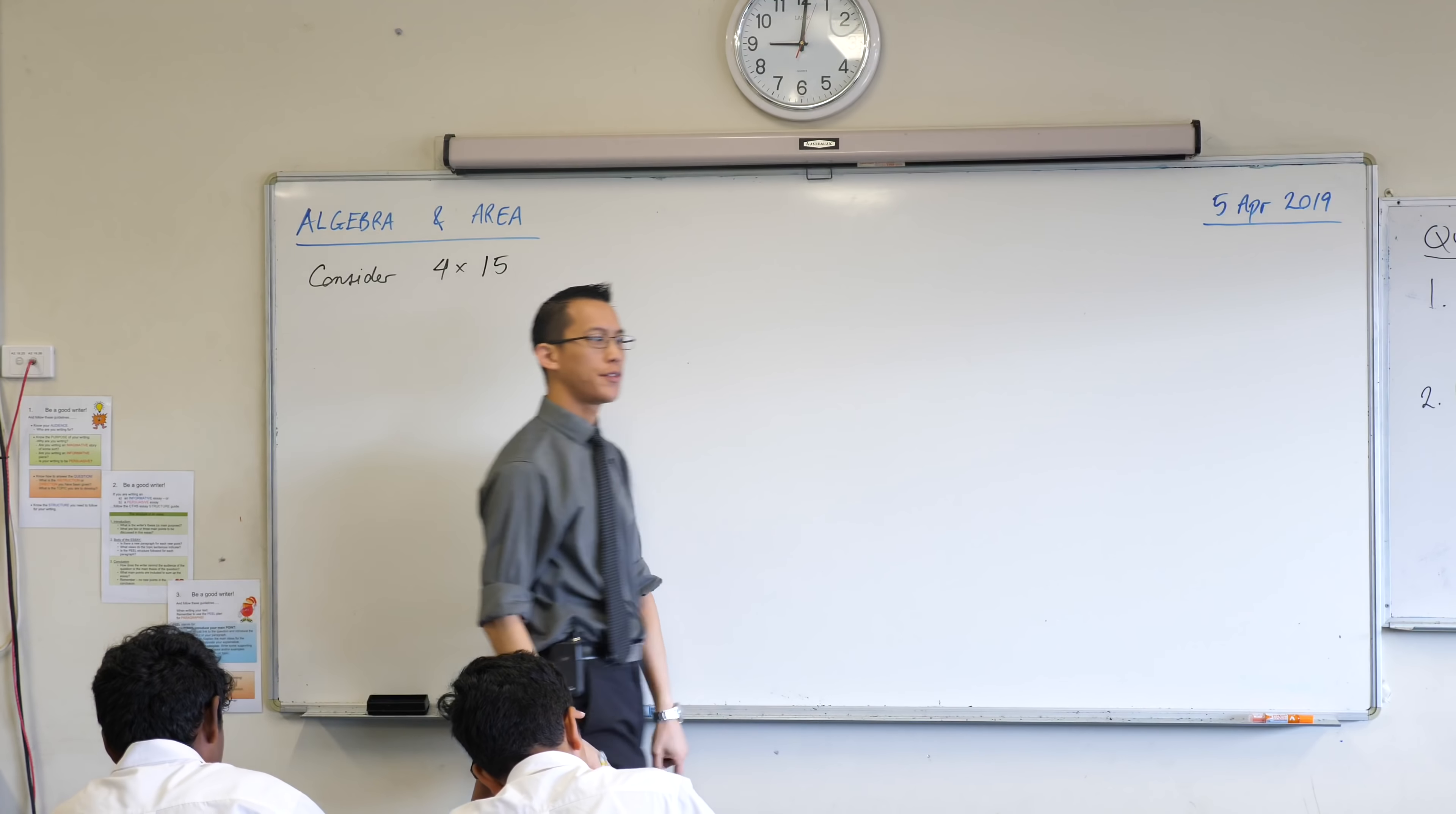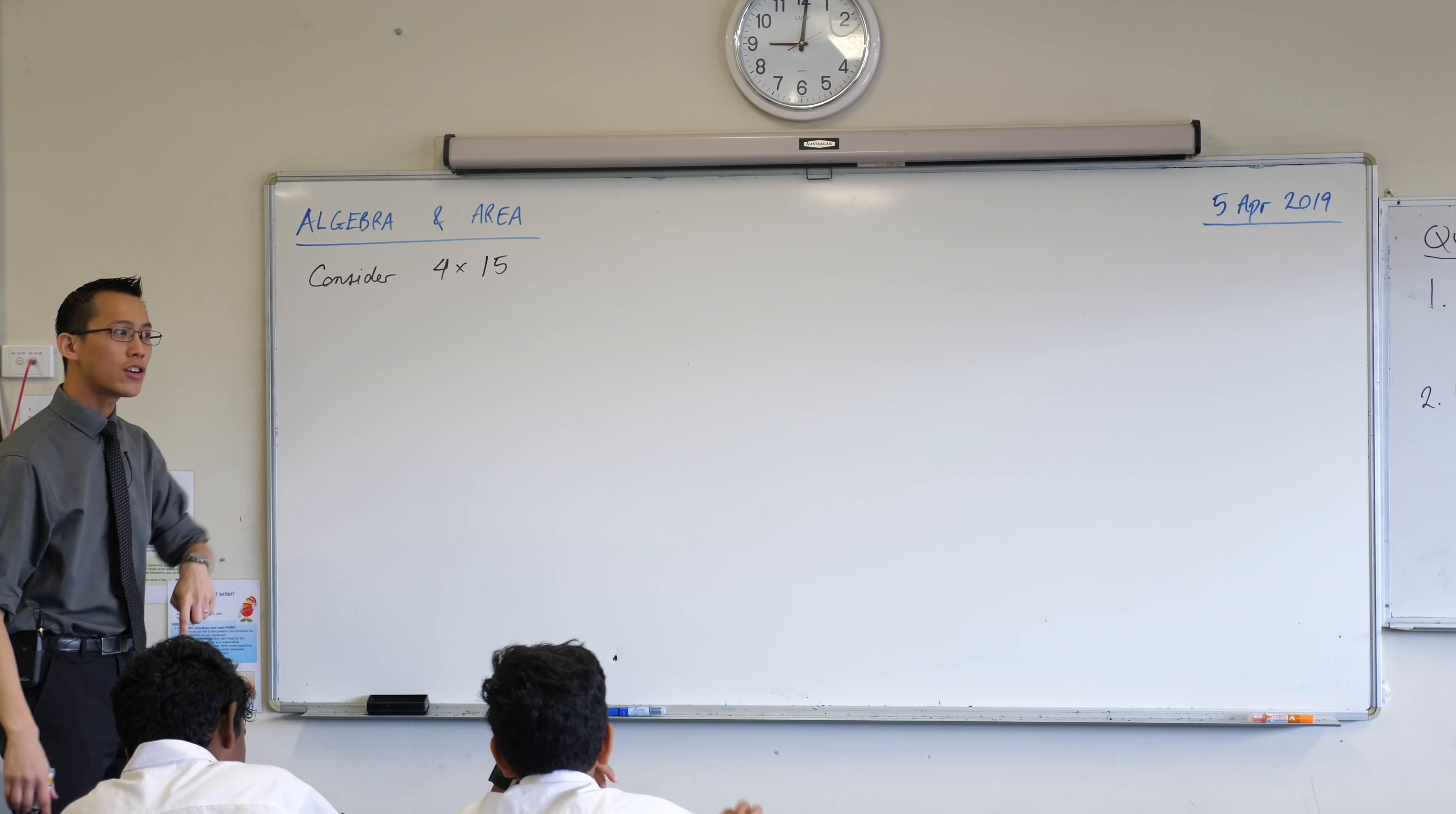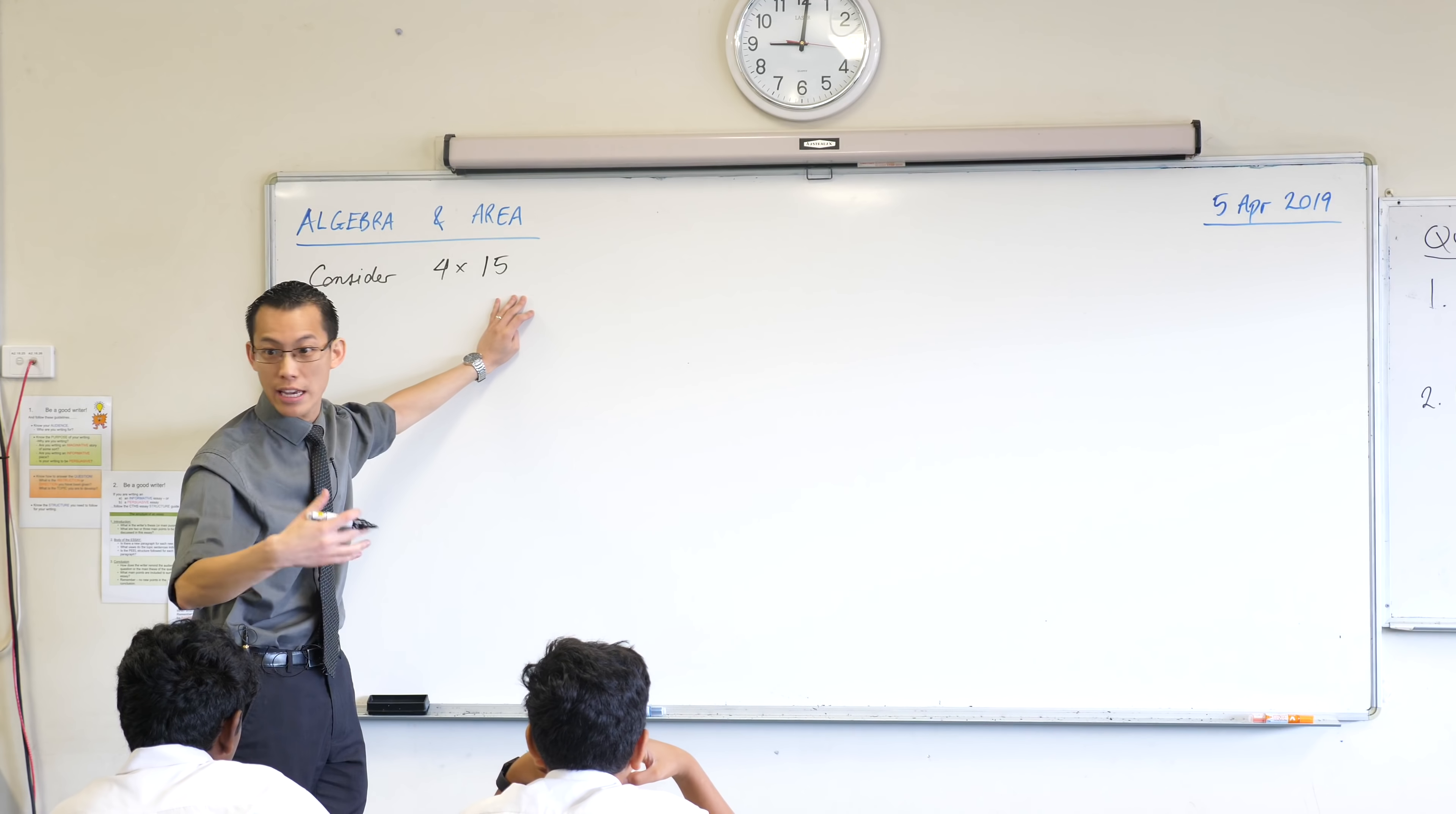Now, I wonder if you remembered when you were doing multiplication early on, like in primary school, if you ever got shown that 4 times 15, you can think of it not just as a number, which by the way, what is 4 times 15? It's just 60, right?